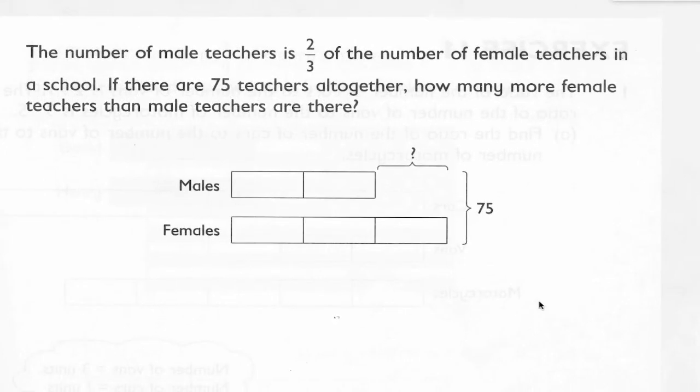This problem says the number of male teachers is two-thirds the number of female teachers. So again, be aware of the first term that comes up in the sentence. Male teachers is going to be the first term of our ratio. And the second term that comes up, the number of female teachers, is going to be the second term. So let's read this again. The number of male teachers is two-thirds the number of female teachers, or they're in a ratio of two to three. That means for every two male teachers, there are going to be three female teachers. That's the ratio.